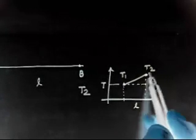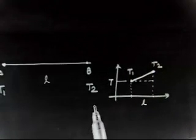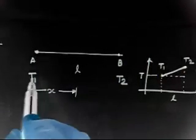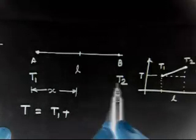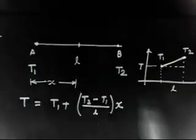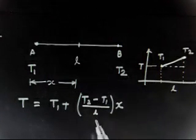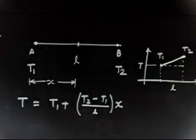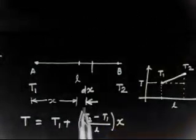Plotting distance on the x-axis and temperature on the y-axis gives a linear graph. So at any distance X from A, the temperature T will be T1 plus the difference (T2 minus T1) divided by L, multiplied by X. This is the temperature at a distance X from A.